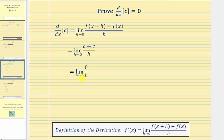And zero divided by h, as long as h isn't zero, simplifies to just zero. And therefore, the limit as h approaches zero of zero is just zero, proving the derivative of a constant with respect to x is zero.